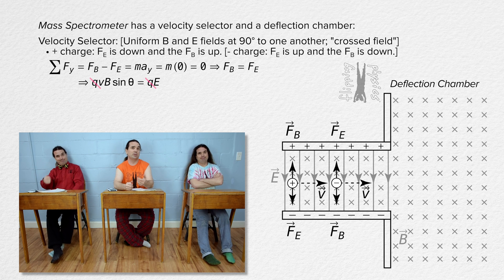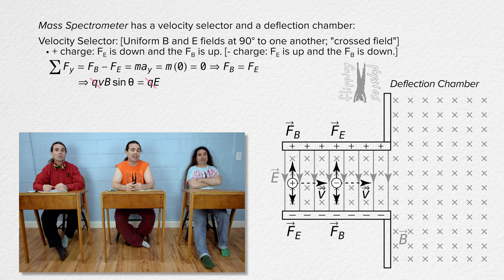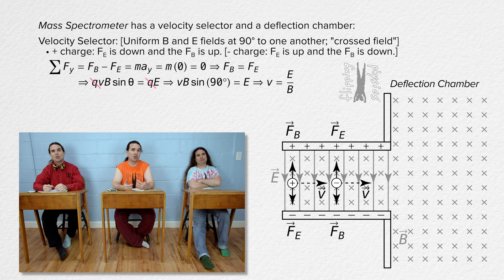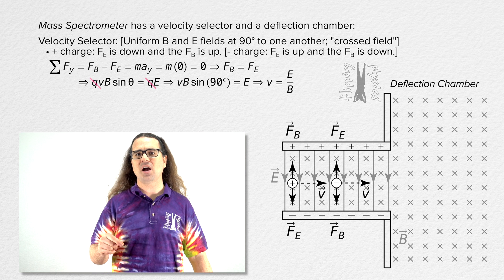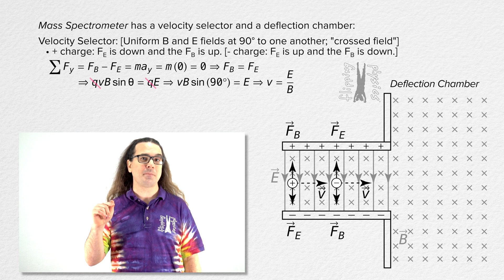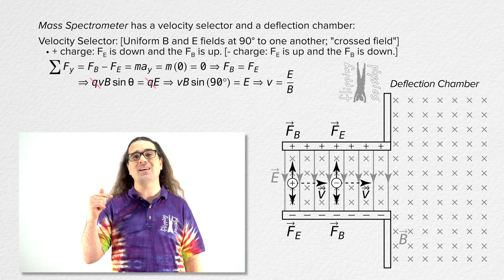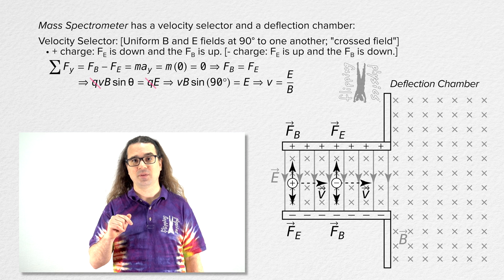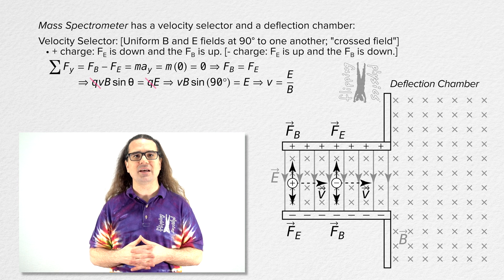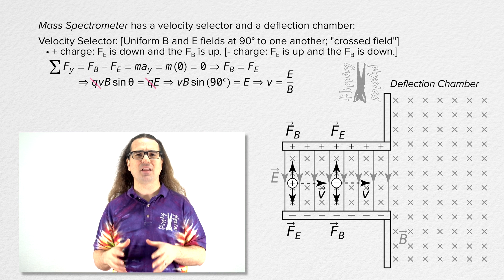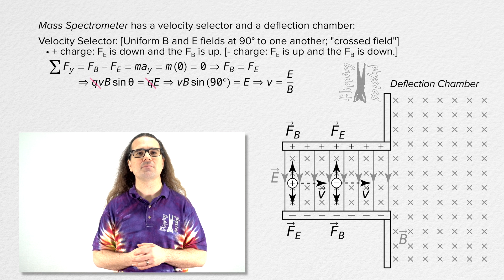The angle between the direction of the velocity of the charge and the direction of the magnetic field is 90 degrees, and the sine of 90 degrees is 1. So the velocity of the charge is equal to the ratio of the electric field to the magnetic field. This means that only charges with a constant velocity equal to the ratio of the electric field to the magnetic field will move through the velocity selector with a constant horizontal velocity, which is why it is called the velocity selector. The only charges which make it all the way through all have the same velocity, equal to the electric field divided by the magnetic field.